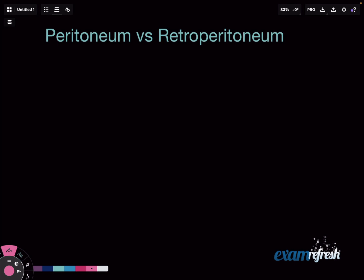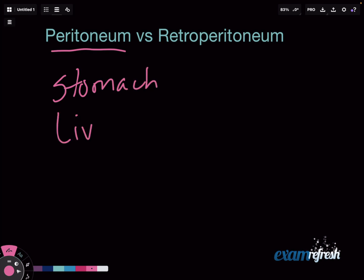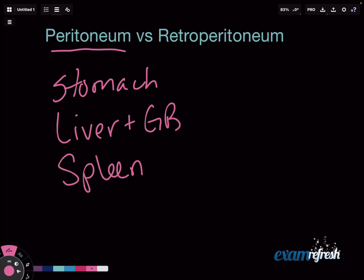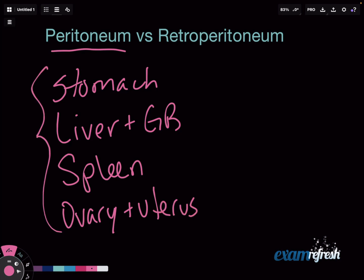So let's list off the things that are in the peritoneum. It would be the stomach, the liver, and the gallbladder — they kind of go hand in hand — the spleen, and you also have your ovaries and uterus. These are the ones that I think are the most important for us to know.